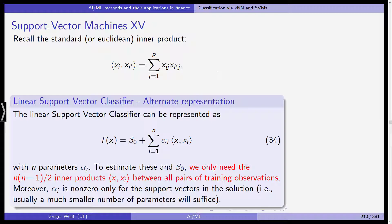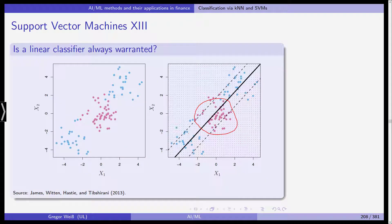First of all, recall the standard, in this case, the Euclidean inner product for two vectors, xi and xi dash. You have the scalar product, the Euclidean inner product of two vectors, and we need this, because the linear support vector classifier can be represented. It's just a different representation, different way of showing what the support vector classifier looks like. With n parameters alpha i. It's the hyperplane. The hyperplane is given by beta zero plus the sum of parameters alpha i times the inner products of x and xi.